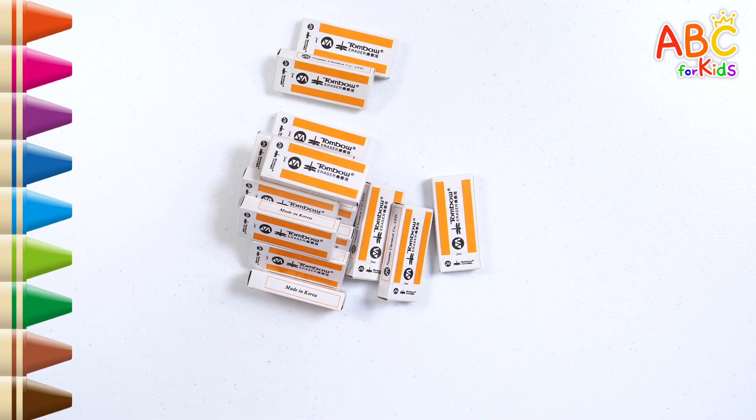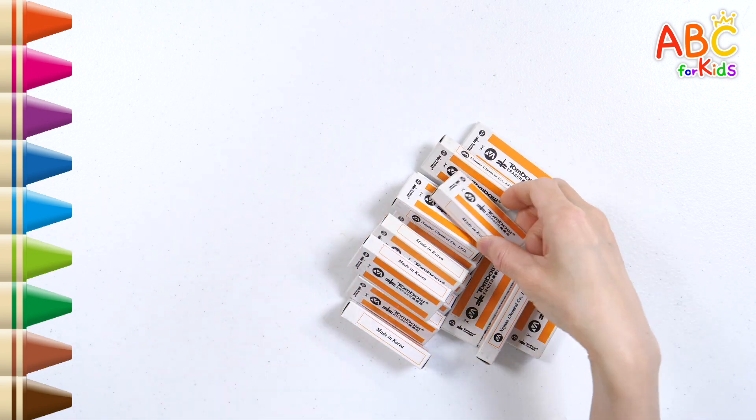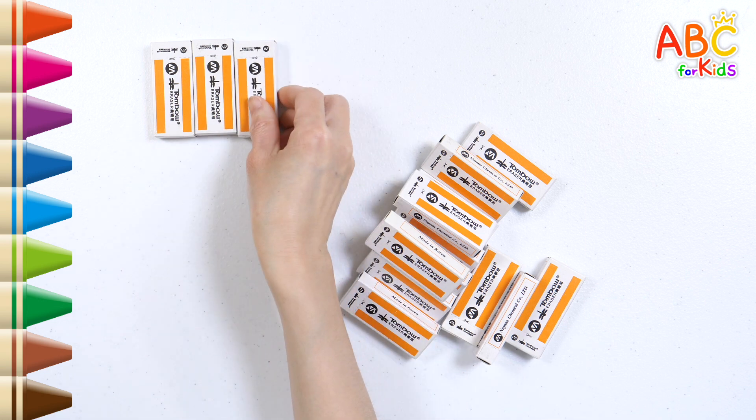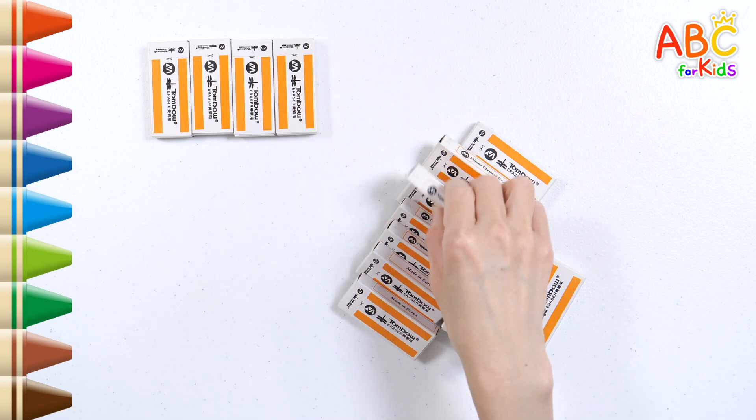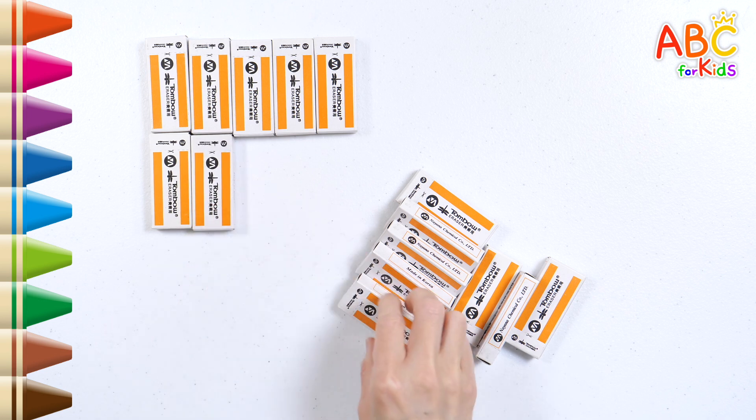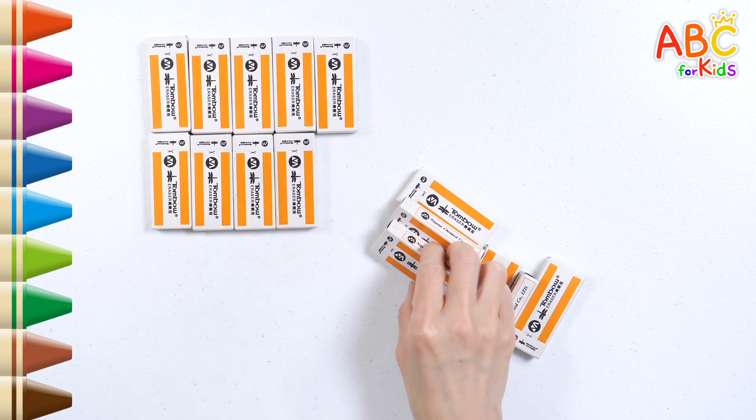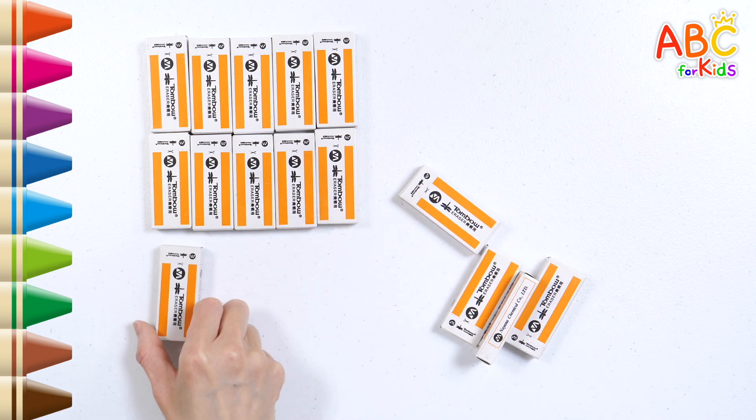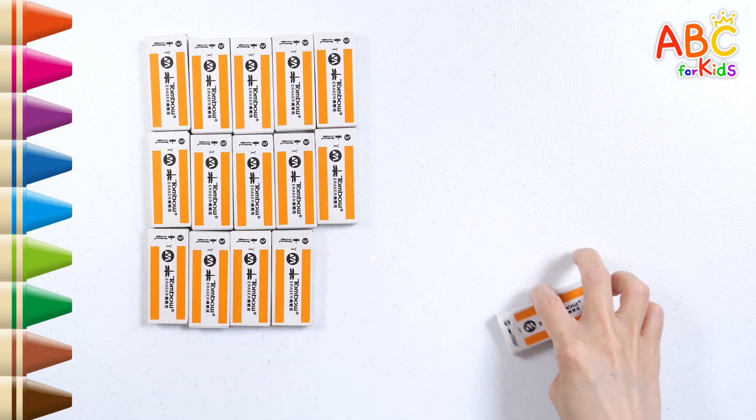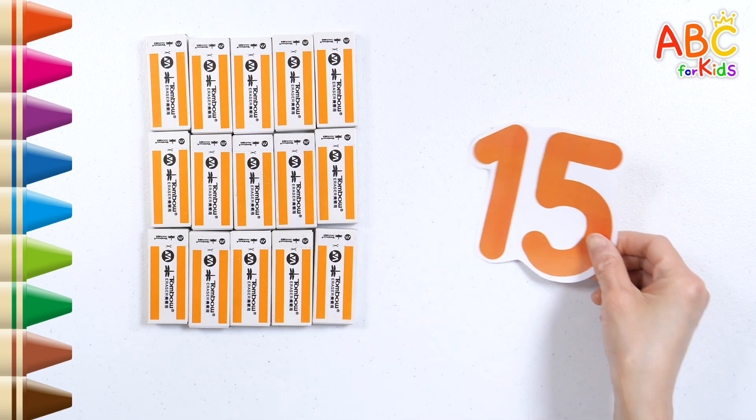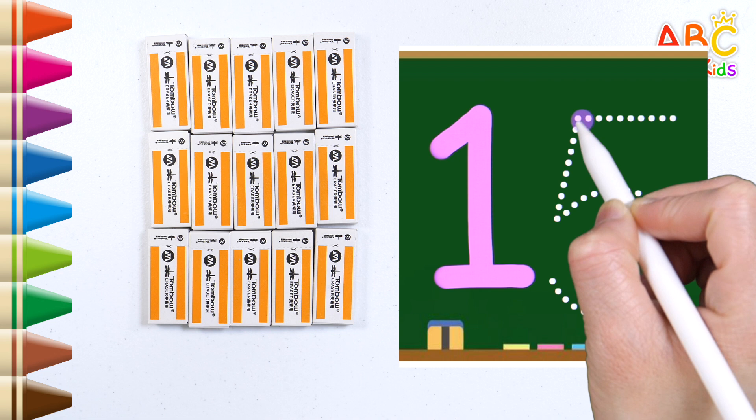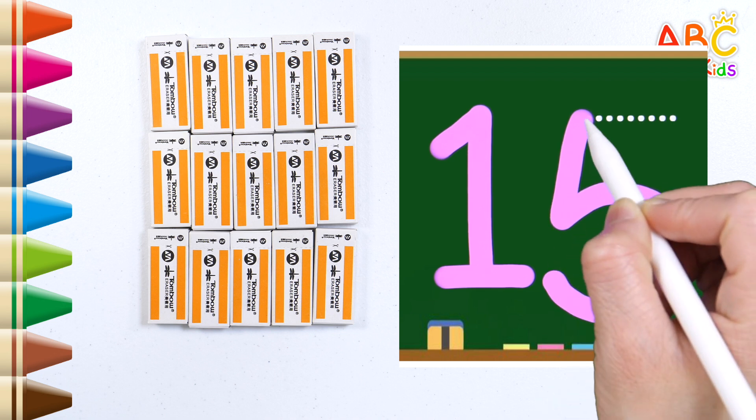What's in it? It's an eraser. Let's count how many. One, two, three, four, five, six, seven, eight, nine, ten, eleven, twelve, thirteen, fourteen, fifteen. Fifteen erasers in all. Let's write the number. Fifteen.